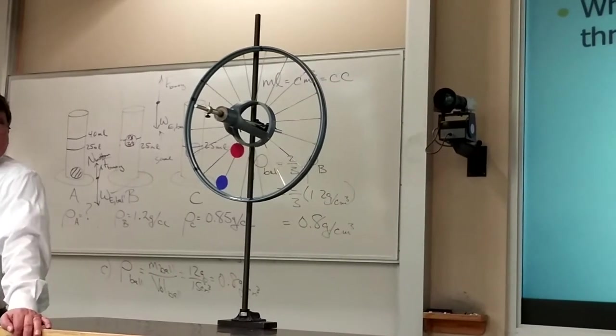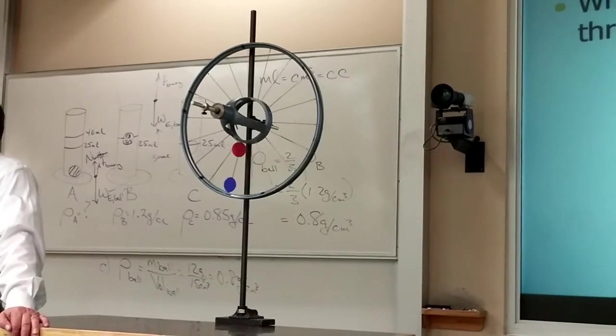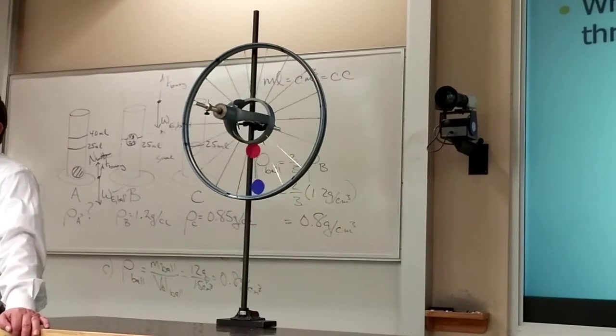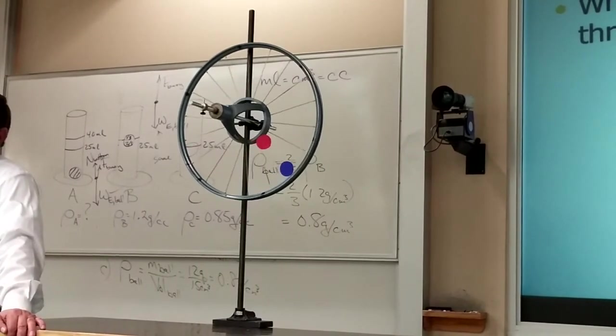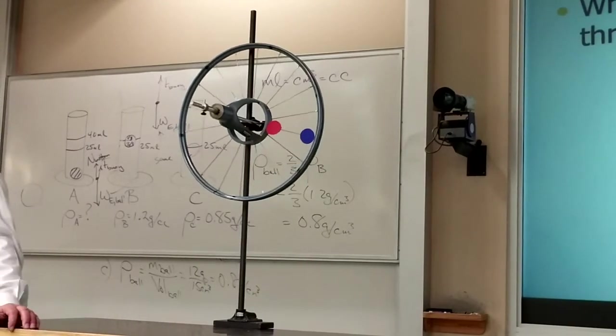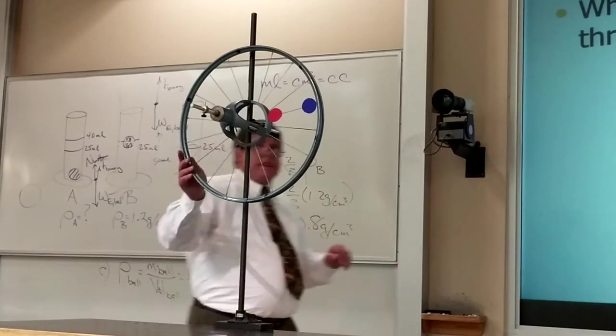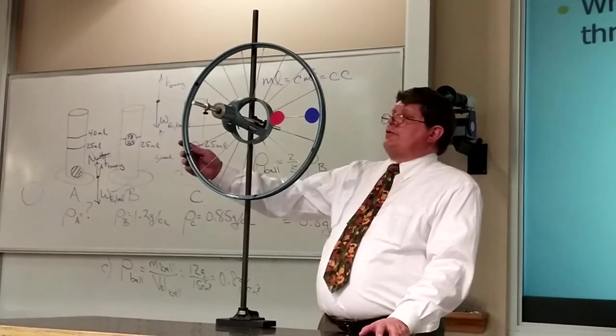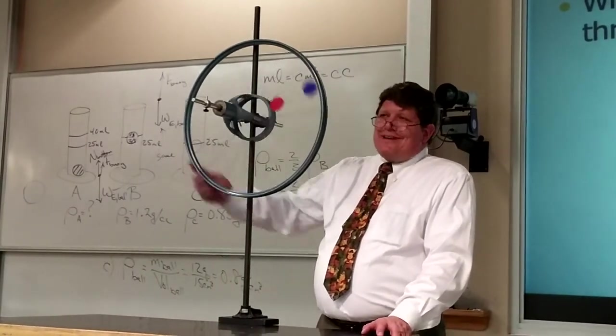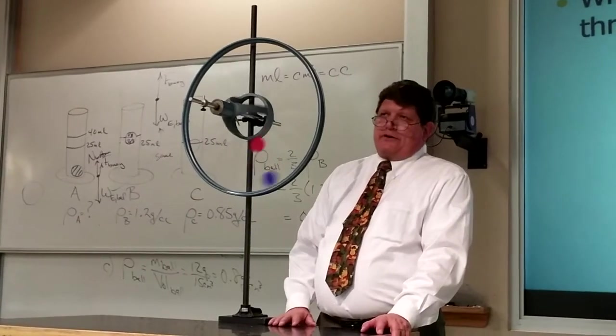But in truth, 360 is just a really easy number to work with. You can divide it by 12, you can divide it by 10, you can divide it by 8. You can divide it by all sorts of things. And so it's just a useful number. But it's not the number that nature wanted us to use.